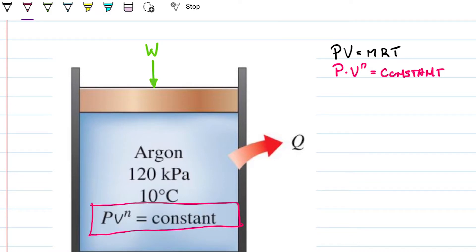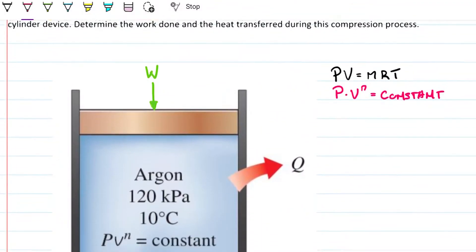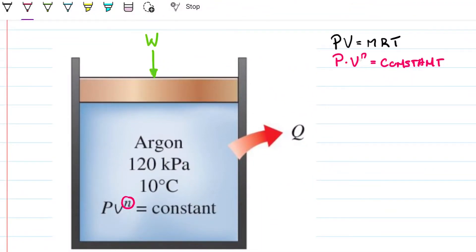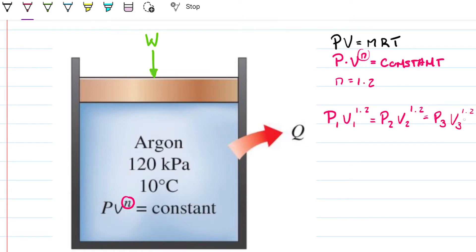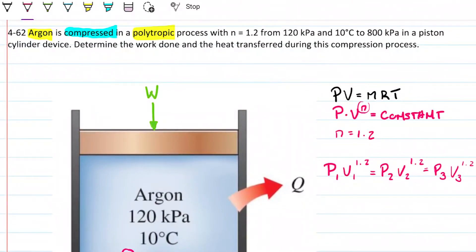This image actually reminds you of that in case you forgot on a test or exam. The N is 1.2, so P1 times V1 to the 1.2 equals P2 times V2 to the 1.2, and so on for any state in a polytropic transformation. We're going from 120 to 800 kilopascals. We have the temperature at the first state. We need to determine the work and the heat transferred during this process.